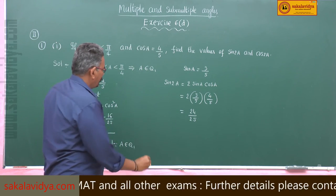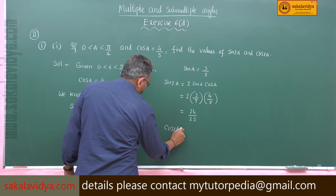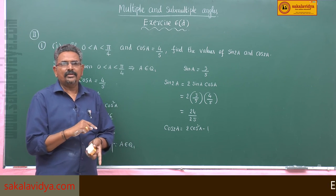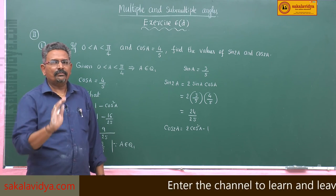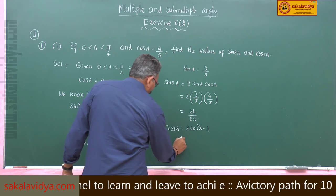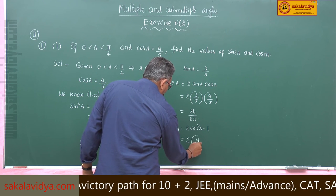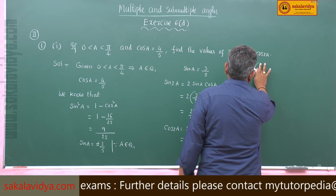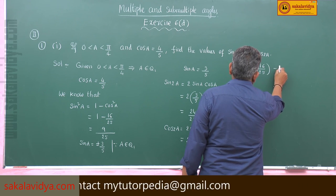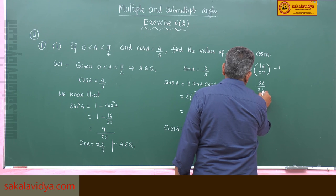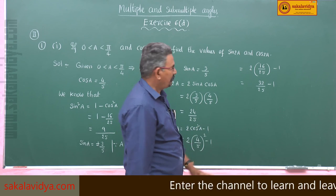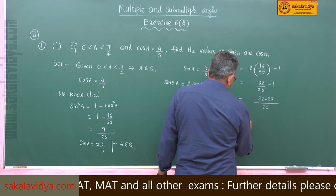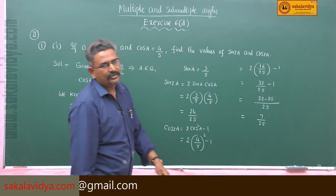Now for cos2A: cos2A = 2cos²A − 1. You can also use 1 − 2sin²A. Here, 2 × (4/5)² − 1 = 2 × 16/25 − 1 = 32/25 − 1. Taking LCM 25: (32 − 25)/25 = 7/25. Both values have been determined: sin2A = 24/25 and cos2A = 7/25.